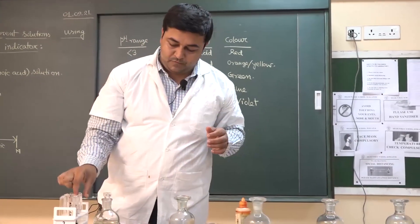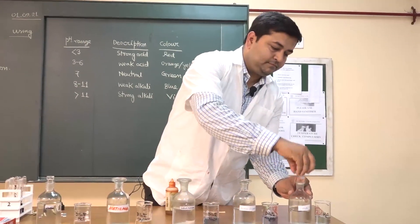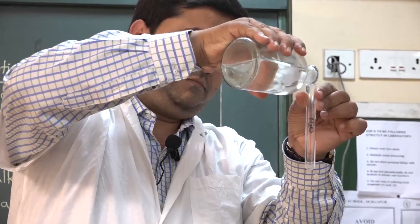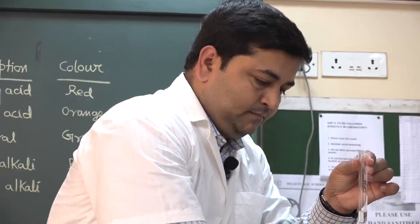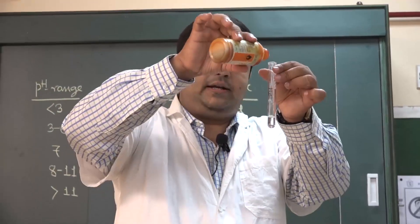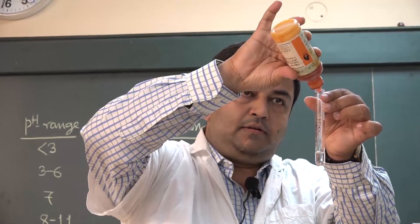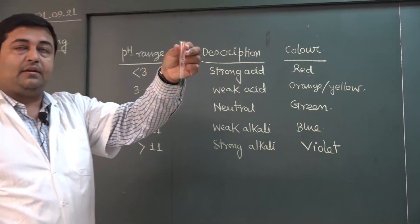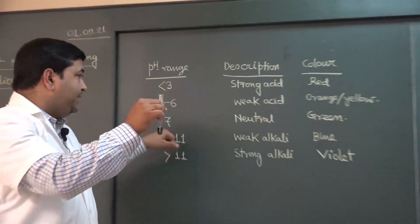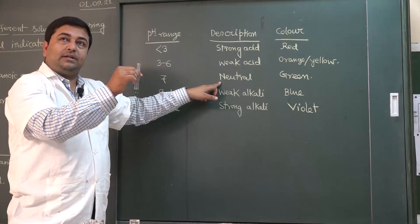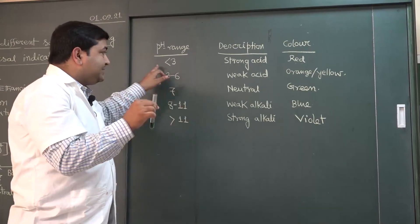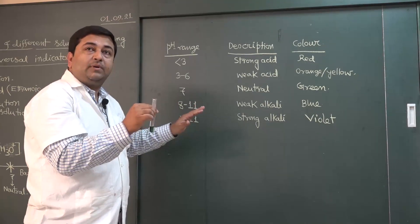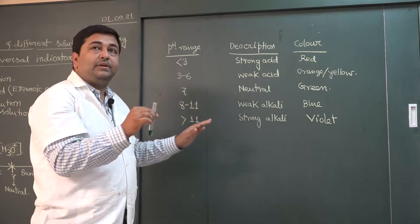The last solution is water. I am adding the universal indicator to water and observing the color change. The color is green. When the color is green the pH is 7, meaning water is neutral. So for acetic acid and hydrochloric acid the pH is below 7, for sodium hydroxide and sodium carbonate the pH is more than 7, and for water you get pH 7.